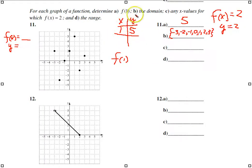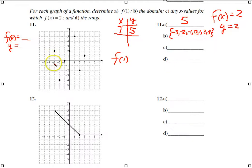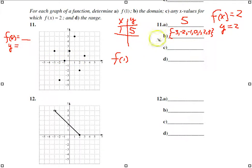For letter b, they're asking for the domain. We look at all our points and want to know our X values. So there's a -3, a -2, a 1, a 0, a 1, a 2, and a 3. These are our domain values for these points on the graph.